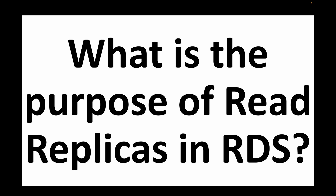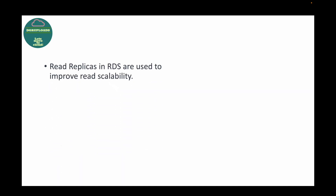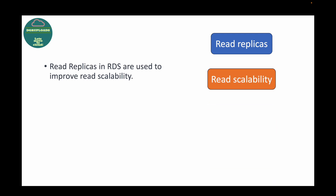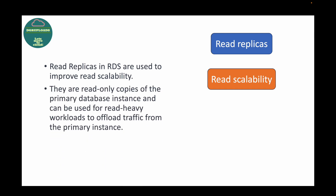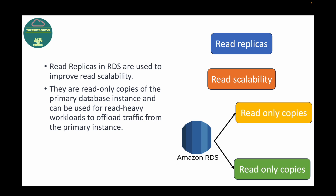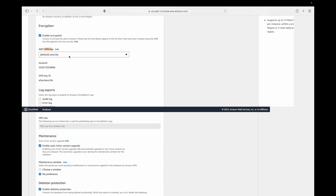The next question is: what is the purpose of read replicas in RDS? If you want to improve the performance of your database, that's where we make use of read replicas. Read replicas are mainly used when you want to increase read scalability. These are read-only copies of your primary database and are used when you have a very read-heavy application. They help you offload traffic and reduce the load on the primary instance.